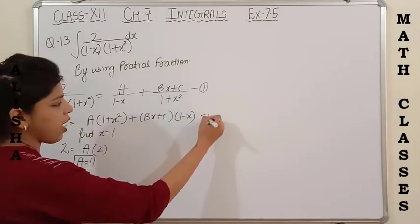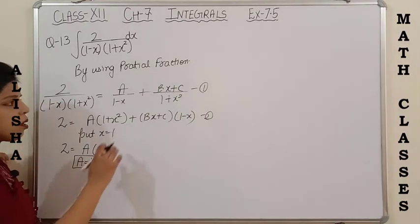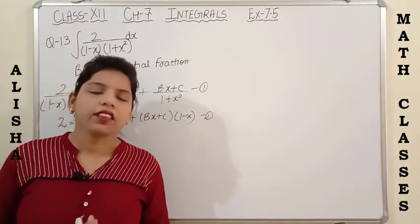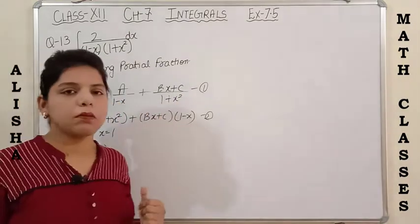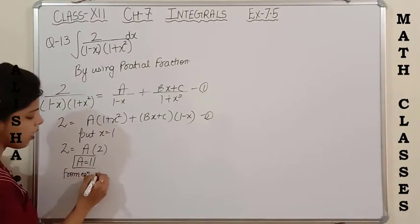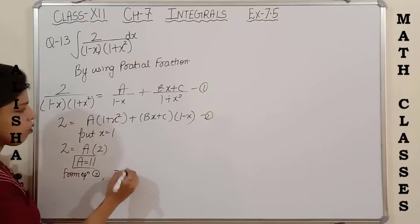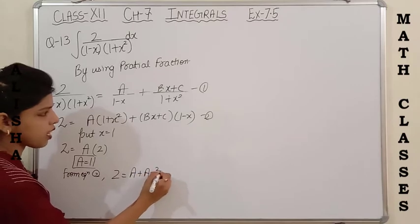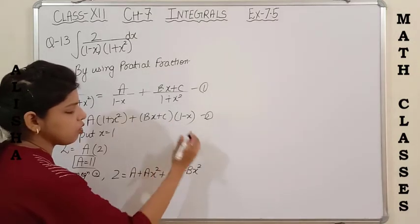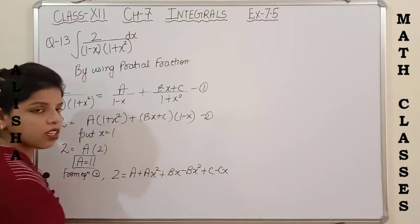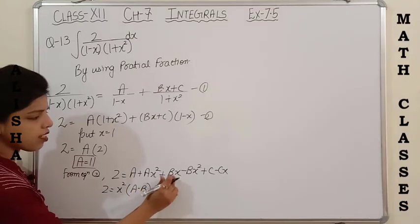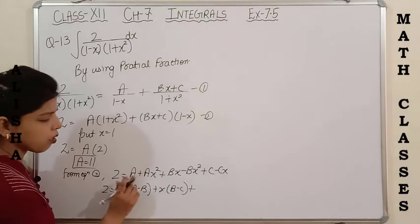Now we need to find B and C. If we put (1 plus x squared) equals 0, we get x squared equals minus 1, or x equals plus or minus iota — the roots are imaginary, so that method doesn't work. We use the comparison method instead. Expanding equation 2, we get: A plus Ax squared plus Bx minus Bx squared plus C minus Cx. Taking coefficients: x squared gives (A minus B), x gives (B minus C), and the constant gives (A plus C).